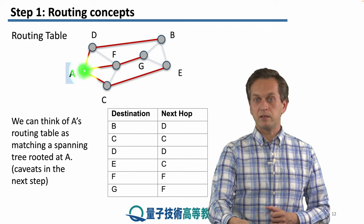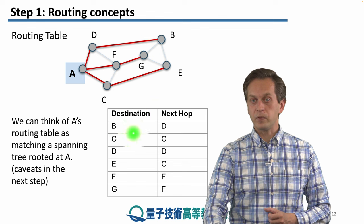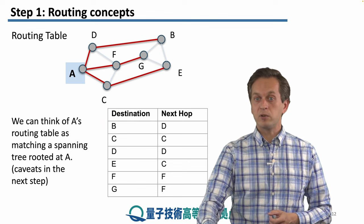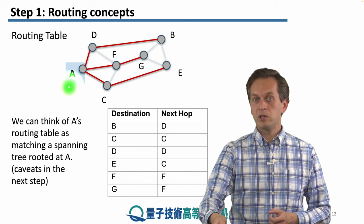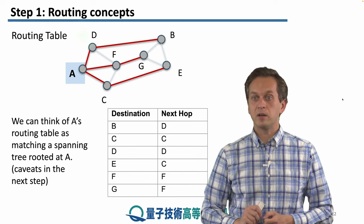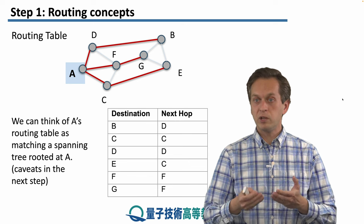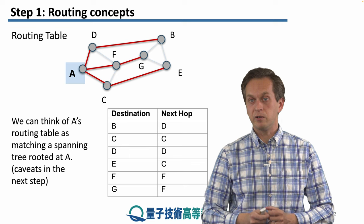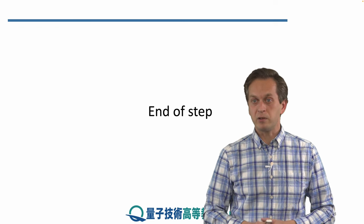For example, if A wants to send the packet to node B, it goes into the routing table, looks at destination B. And what's the next hop corresponding to this destination? It's node D. So it knows that first it must forward the information to node D. And node D will have a similar but maybe a different routing table. This covers the very basics of routing concepts.